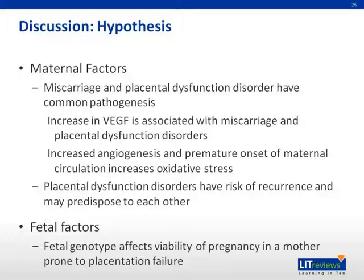Some studies support the hypothesis that miscarriage and placental dysfunction share a common pathogenesis of early placentation failure. An increase in VEGF — vascular endothelial growth factor — is associated with miscarriage and placental dysfunction disorders, leading to increased angiogenesis and a premature onset of maternal circulation, which increases oxidative stress. Fetal genotype may also affect pregnancy viability: a genotype susceptible to implantation failure may result in miscarriage, while a less susceptible genotype may still face late placentation dysfunction later in pregnancy.